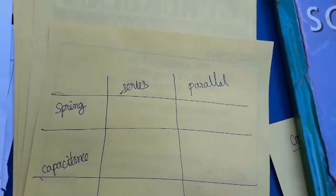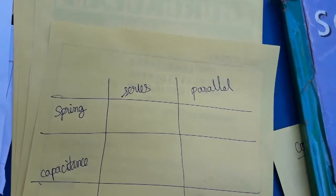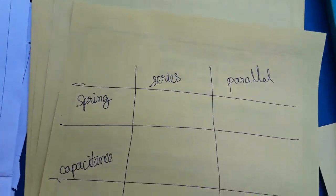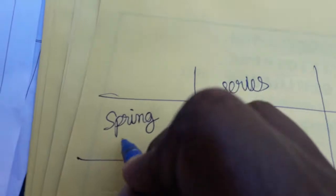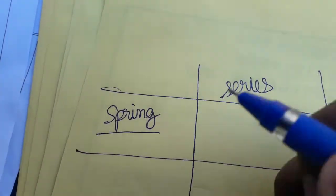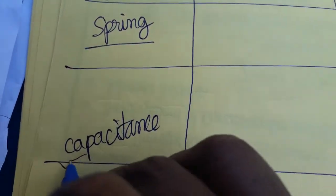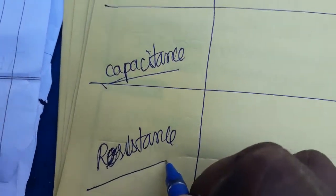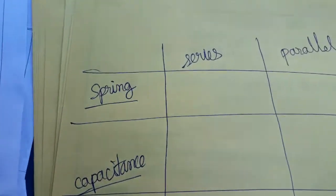Hello students, today we are going to see the comparison of series and parallel. There are three concepts you will get in series and parallel: one is a spring, another one is a capacitance, and another one is a resistance.